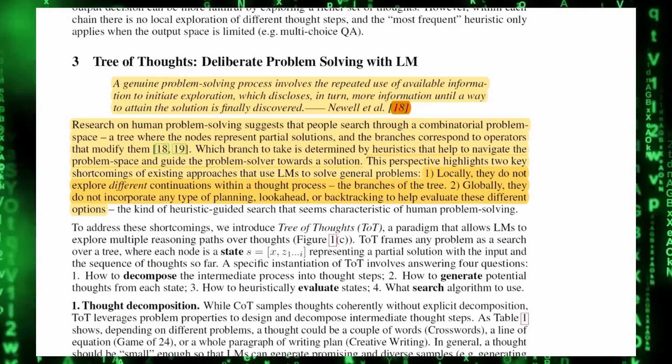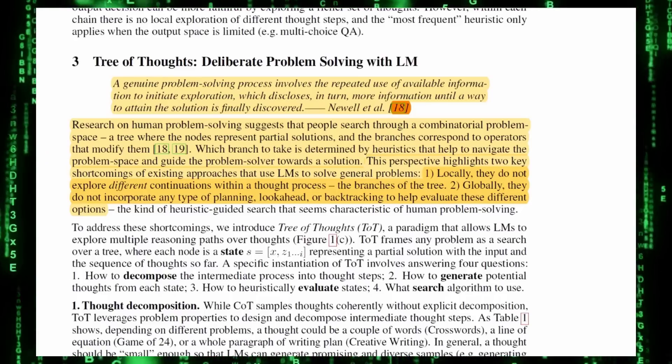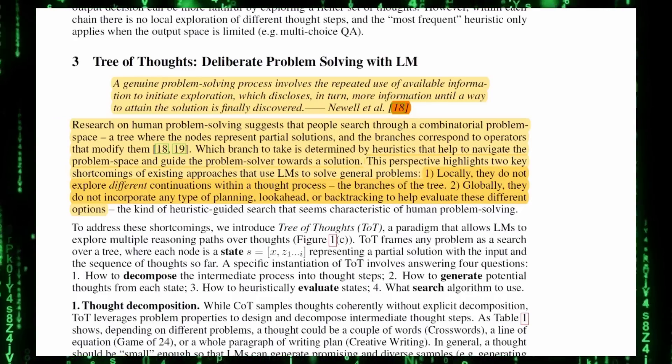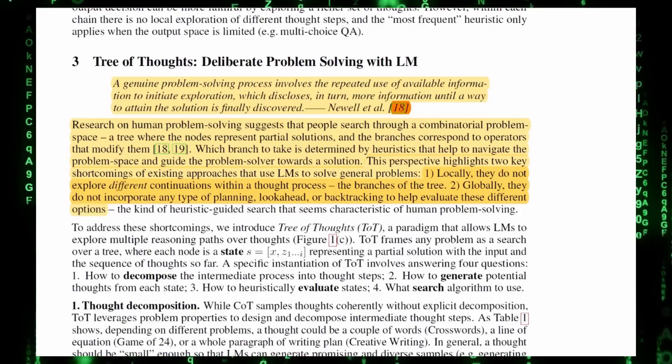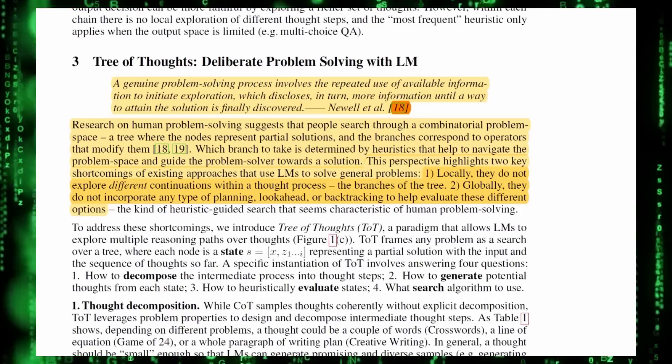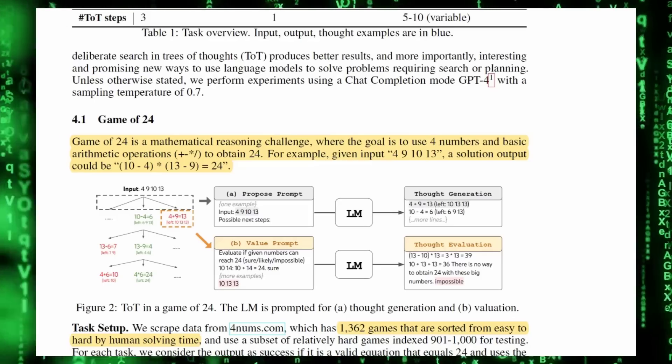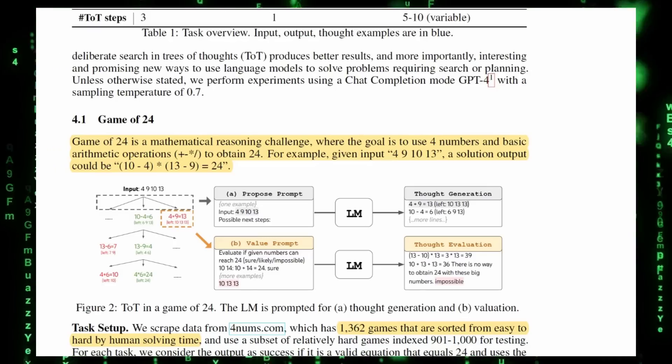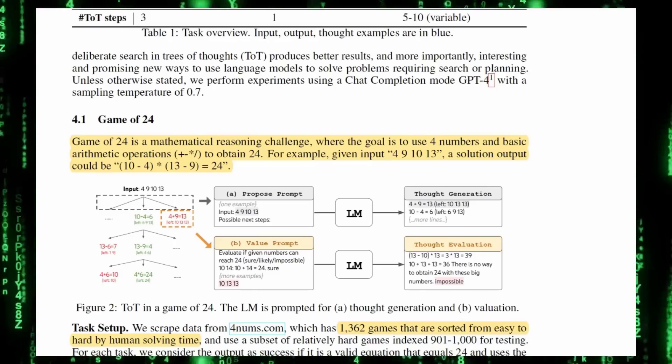There are two shortcomings that our current prompting model has. One, locally, they do not explore different continuations within a thought process, the branches of the tree. And two, globally, they do not incorporate any type of planning, look ahead, or backtracking to help evaluate these different options. To address these shortcomings, we introduce the Tree of Thoughts, a paradigm that allows LMs to explore multiple reasoning paths over thoughts.